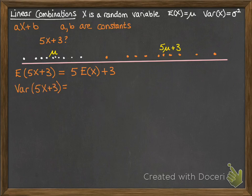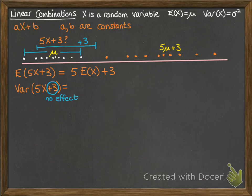Thinking about the variance is a little trickier. The variance of this new distribution — how does it compare to the variance of the original one? The plus 3 doesn't really make much difference. Variance measures spread, and if you moved all of those dots up by 3, it's not going to change how far out they were spread. Adding or subtracting a constant does not affect spread — it just shifts the distribution up or down the line.